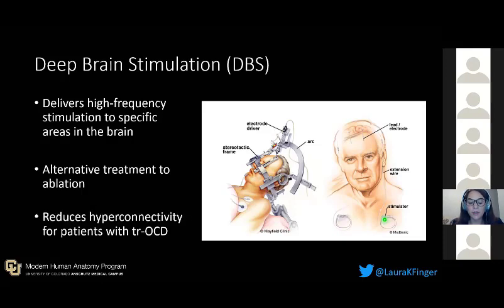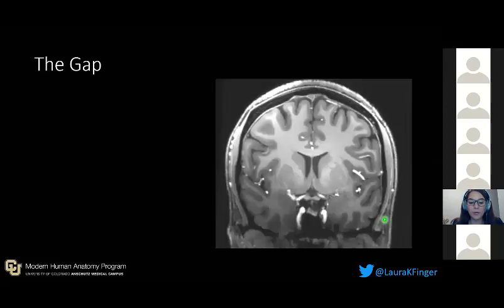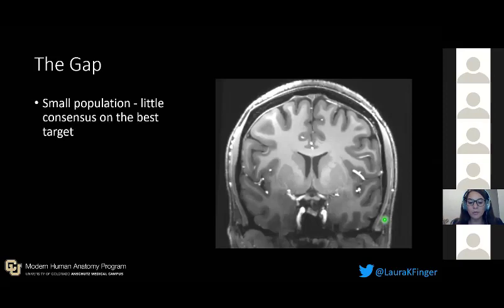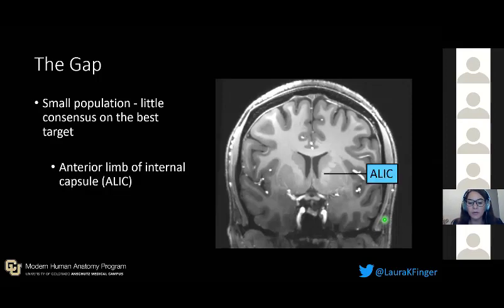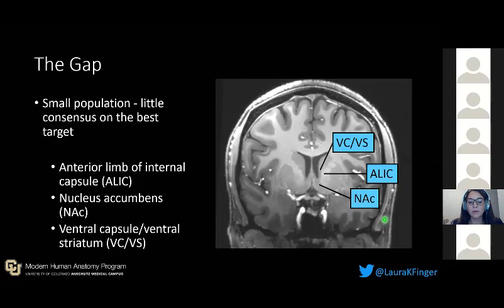Past studies have shown that DBS reduces the hyperconnectivity in patients with treatment-resistant OCD. However, due to the small number of patients with treatment-resistant OCD being treated with DBS — about 150 patients worldwide — there's little consensus on the best target for stimulation. Multiple brain targets have been investigated, including the anterior limb of the internal capsule, nucleus accumbens, and the ventral capsule, or ventral striatum, which are all in similar anatomical locations, seen here in this figure.